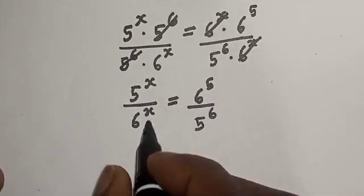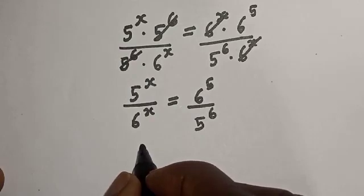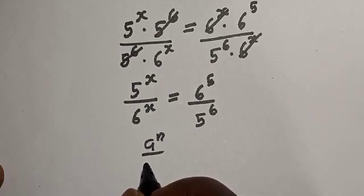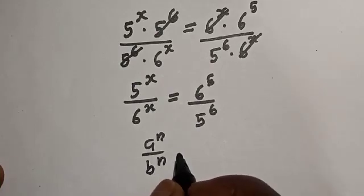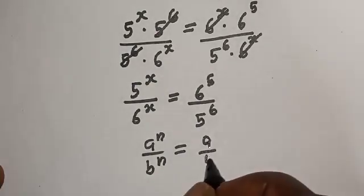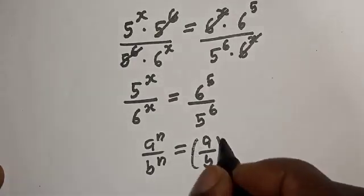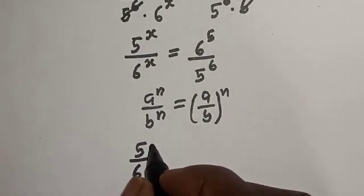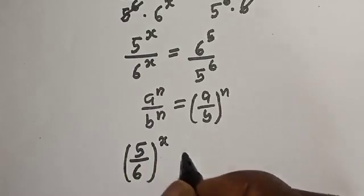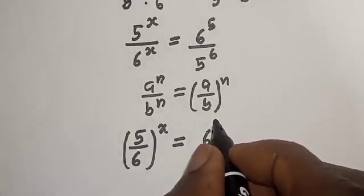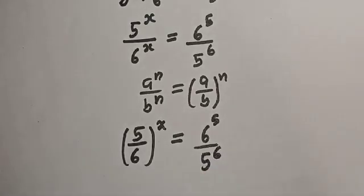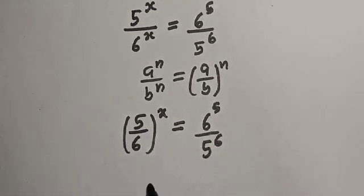Remember, if you have a raised to power n over b raised to power n, this is equal to a over b raised to power n. Then we have 5 over 6 raised to power s is equal to 6 raised to power 5 over 5 raised to power 6. Now let's take the log of both sides.